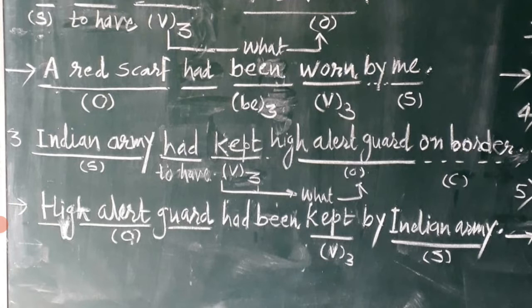Later on, 'had' — again 'be' is converted into 'been' — and 'kept' is kept as usual. Then 'by,' and finally the subject of the sentence 'Indian army.' This way: 'High alert guard had been kept by Indian army' is the passive construction of the given sentence.